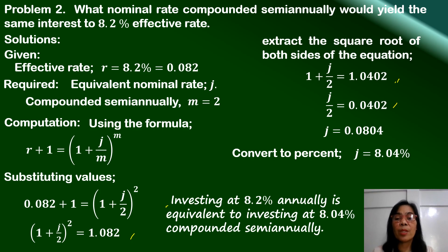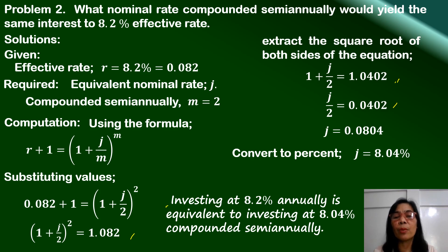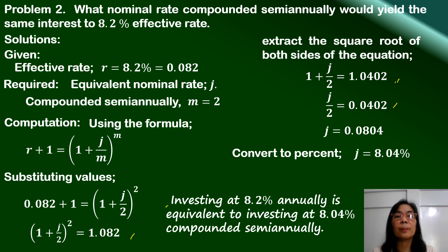So in this problem, investing an amount at an effective rate of 8.2% annually will produce equal interest if it is invested at 8.04% compounded semi-annually.